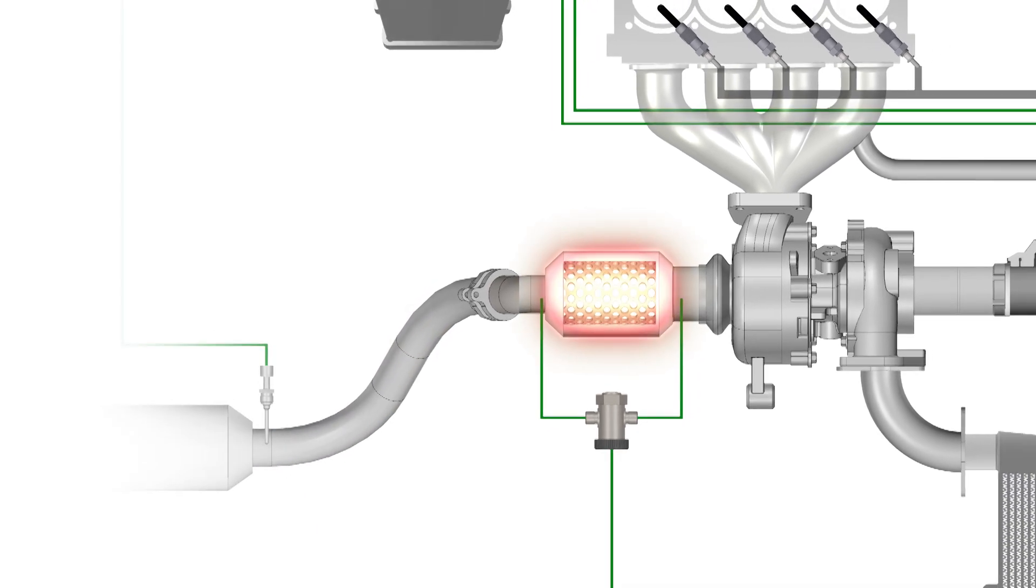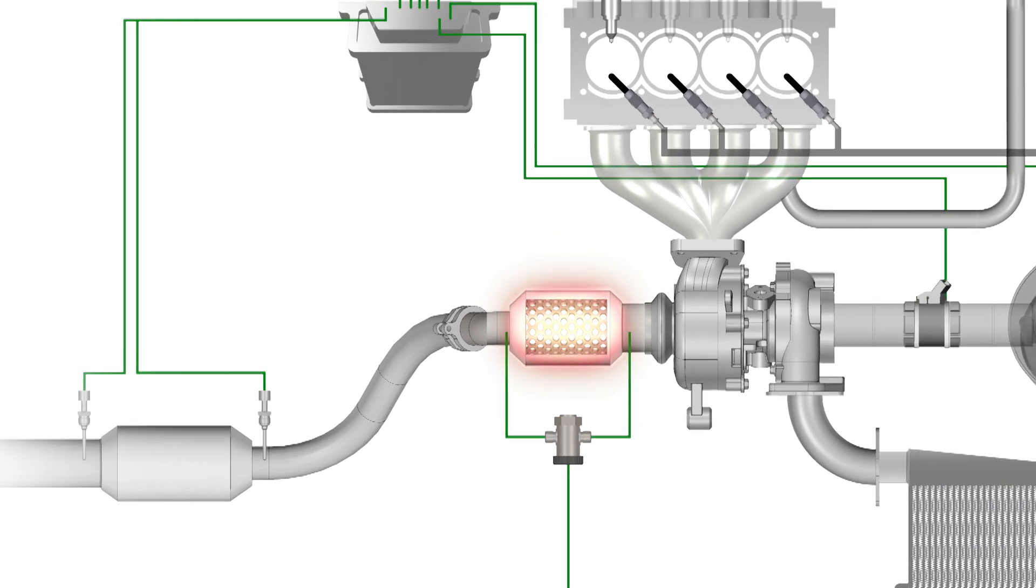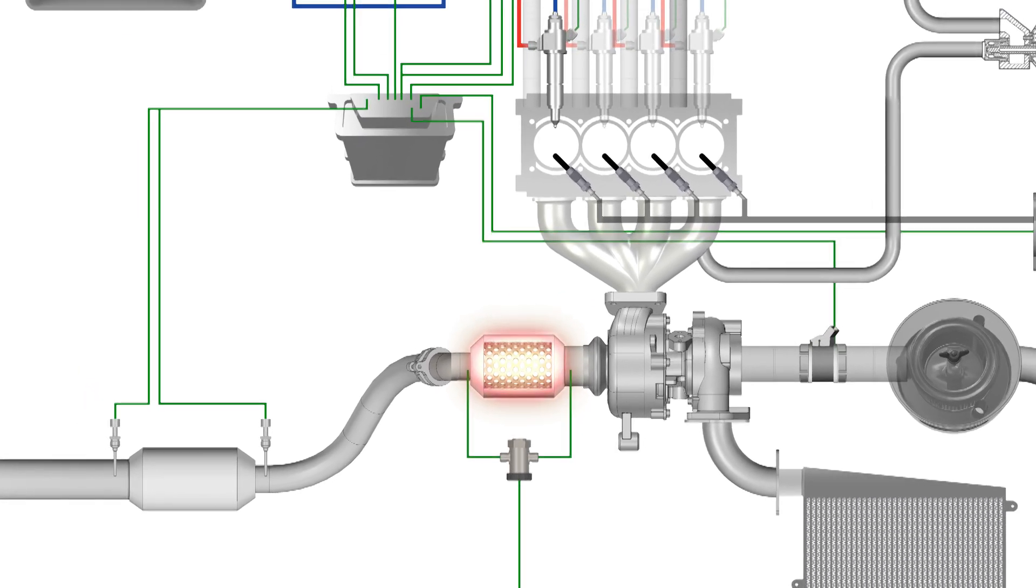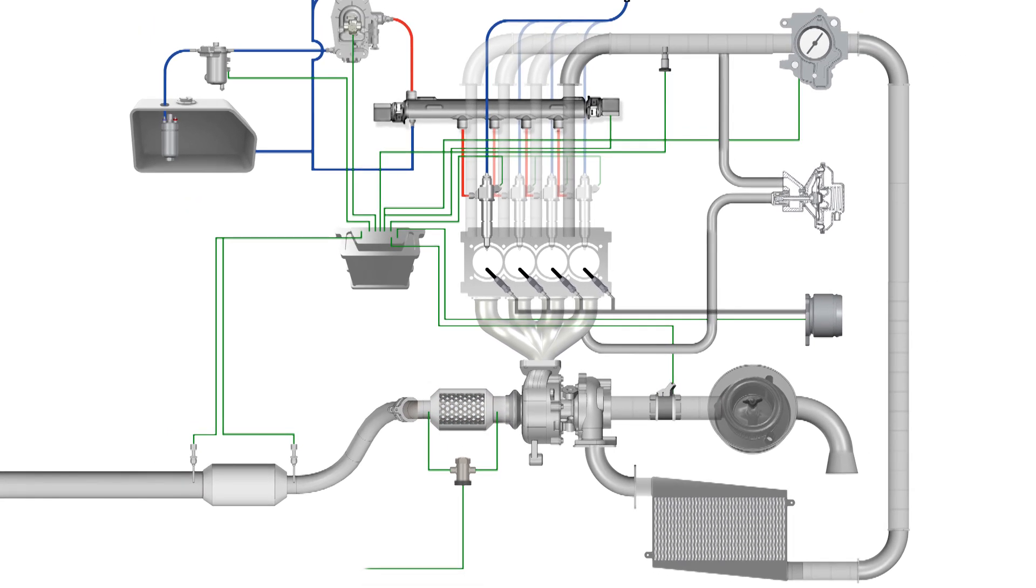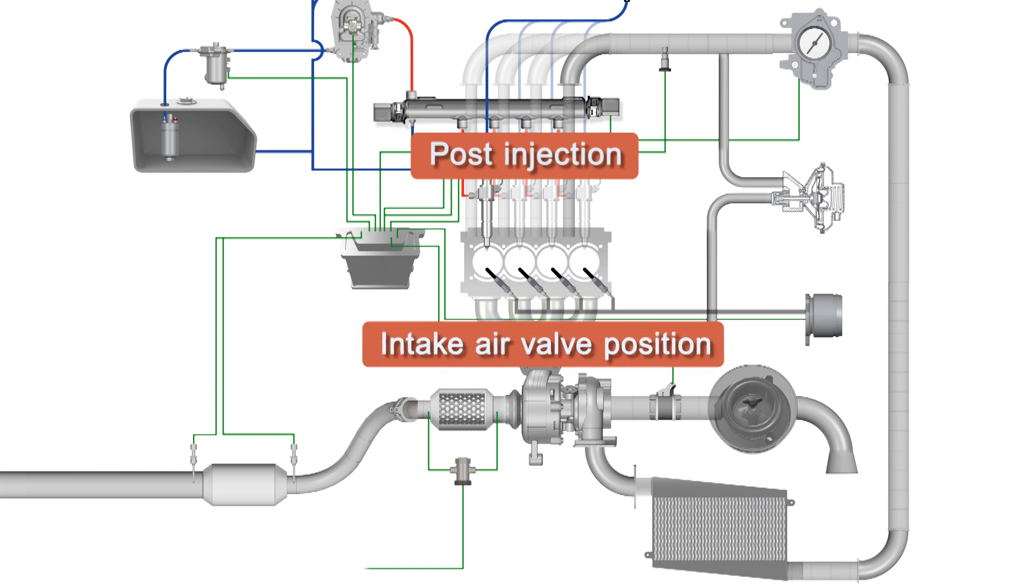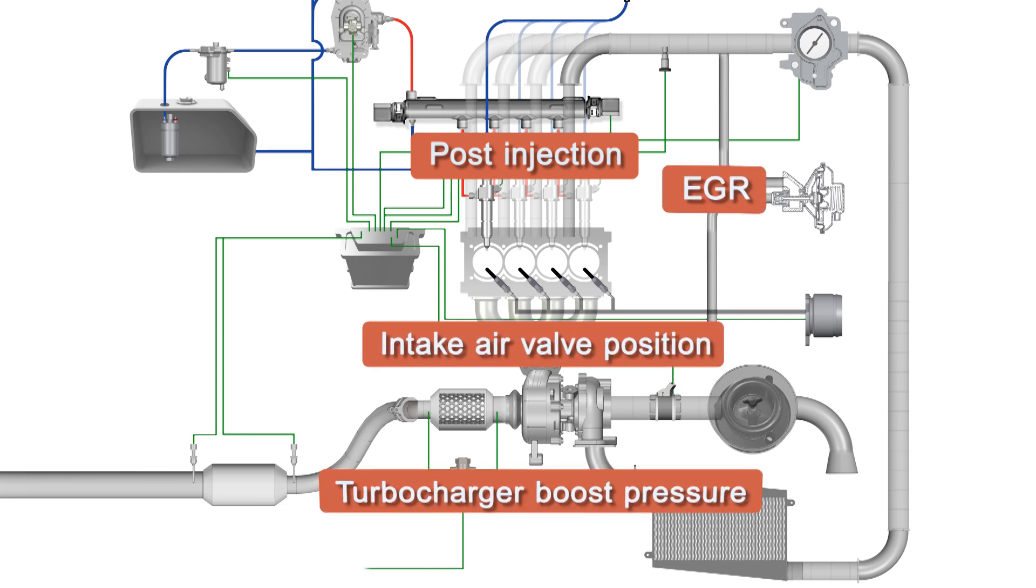When the particulate loading of the DPF reaches a predetermined level, the DPF is actively regenerated by adjusting various engine control functions such as post injection, intake air valve position, EGR and turbocharger boost pressure.